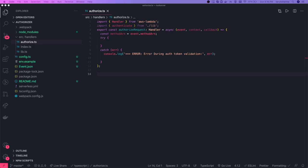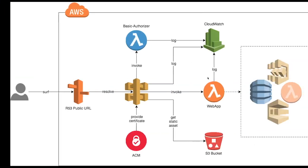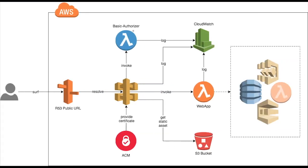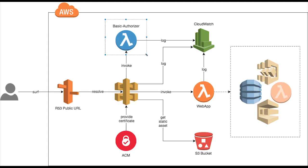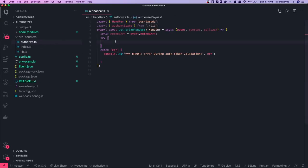Hi everyone, let's start writing the authorizer lambda in this video. We've already talked about creating this basic authorizer which can call another service and decide whether to allow or deny a particular request.